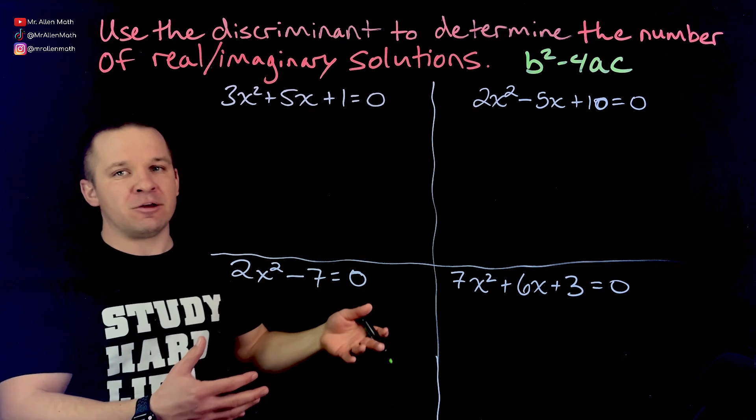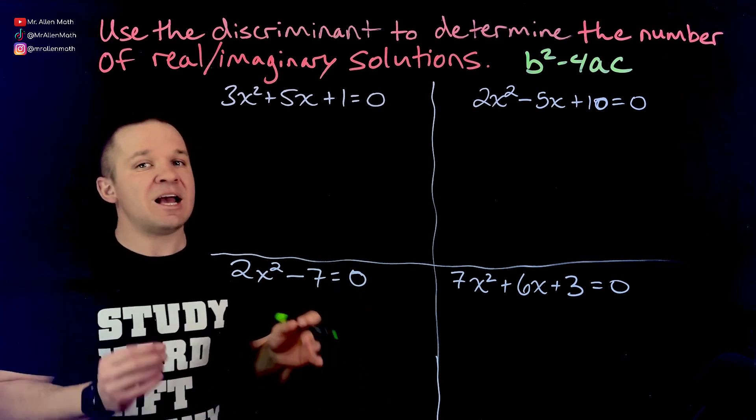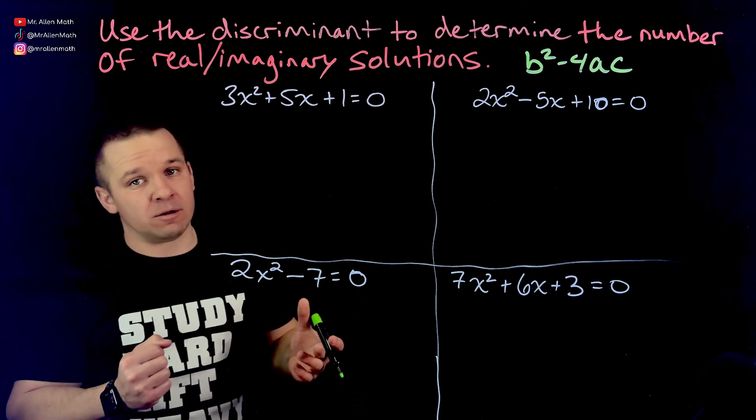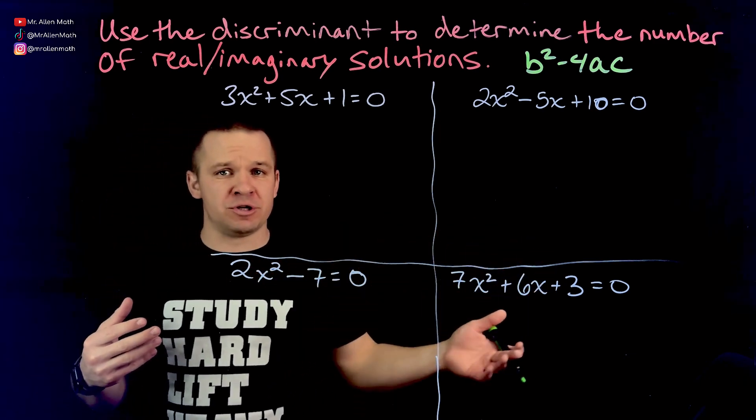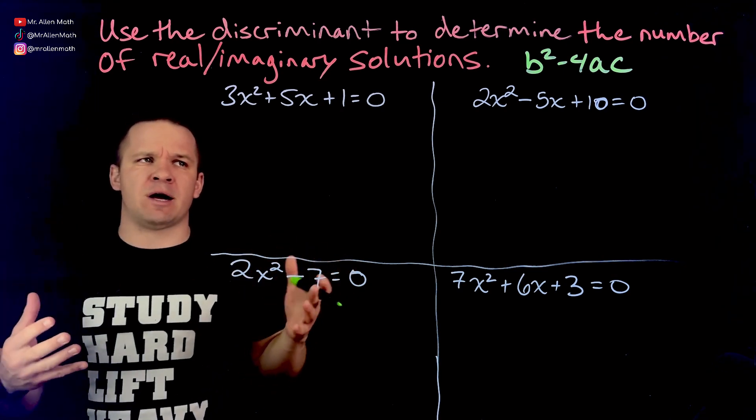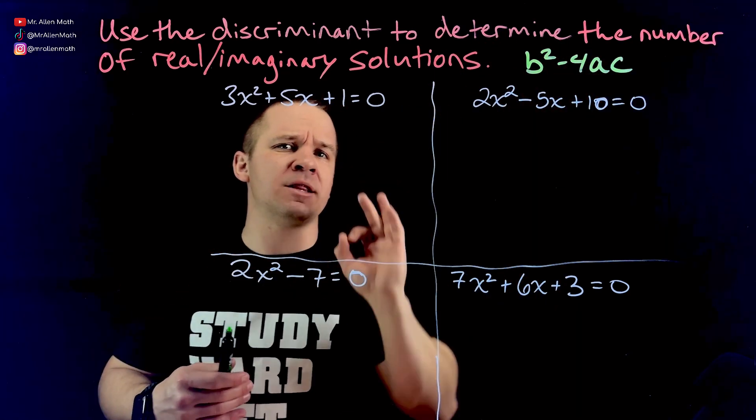Now, if we can get that value, it can tell us if we have two reals, two imaginaries, or one real. Or you could also say no real solutions if it's two imaginaries. And let's think about what would cause that. This part is in the square root in that formula.